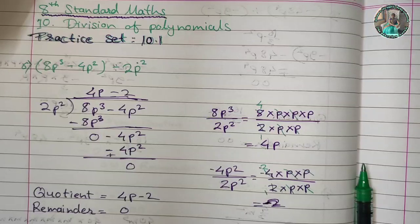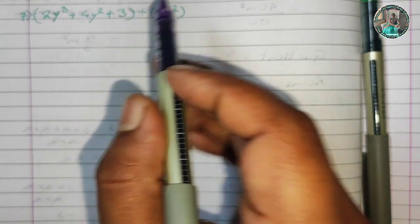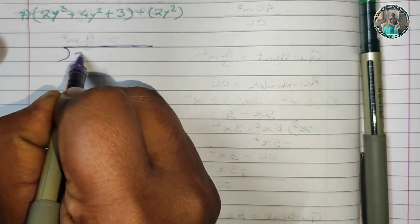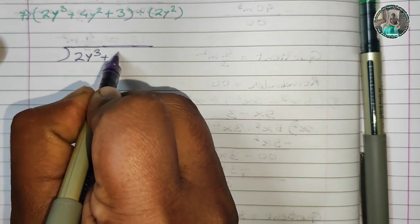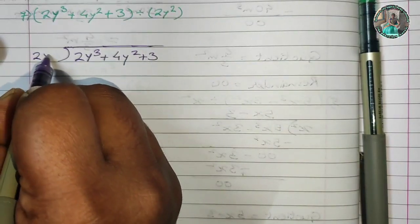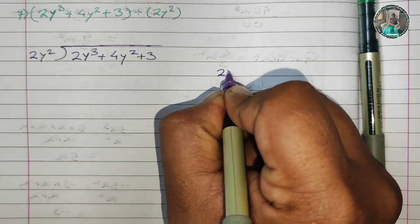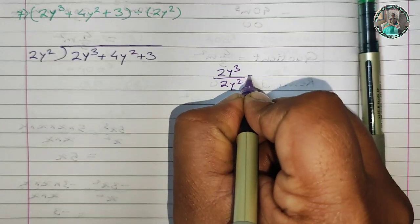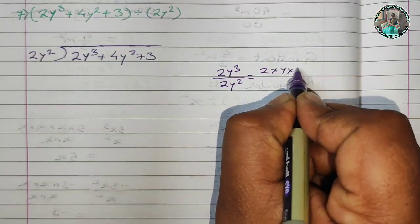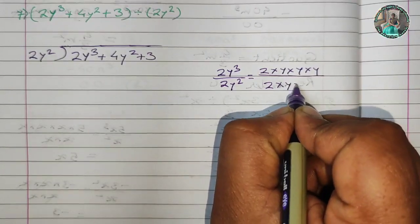Now question 7. What is the 7th question? 2y cubed plus 4y squared plus 3, divide by 2y squared. We look at the first term: 2y cubed divided by 2y squared. That is 2 into y into y into y divided by 2 into y into y.